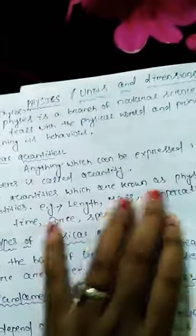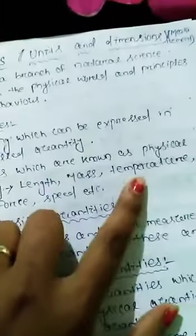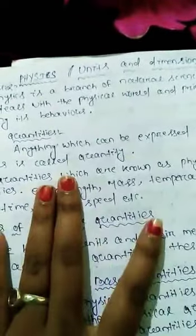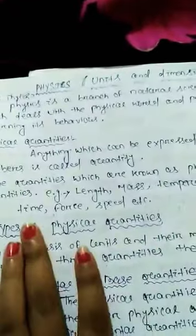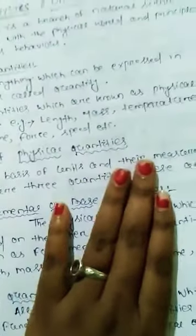Then we discuss about physical quantities. First we know what is a quantity. Anything which can be expressed as a number is called a quantity. When we count or express the quantity, some of those are known as physical quantities. Some examples are length, mass, temperature, time, force, speed, etc.